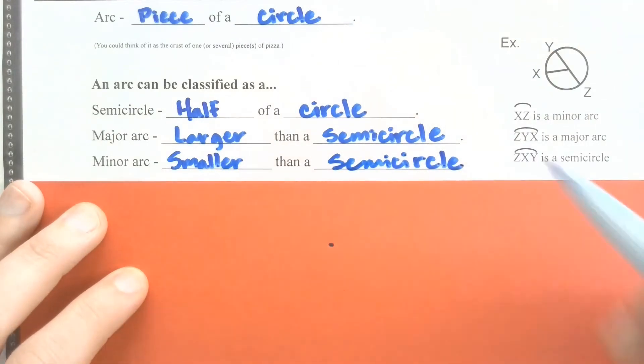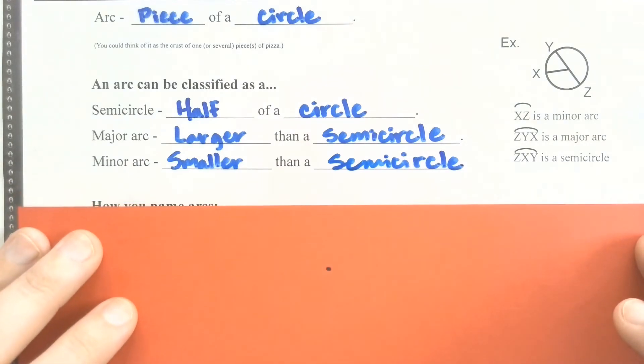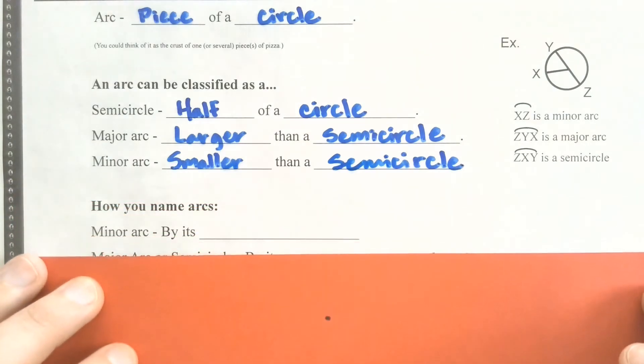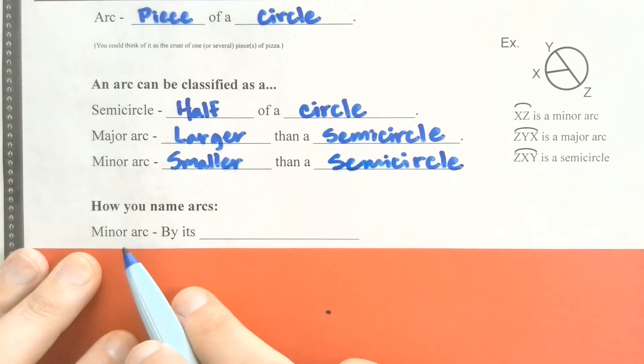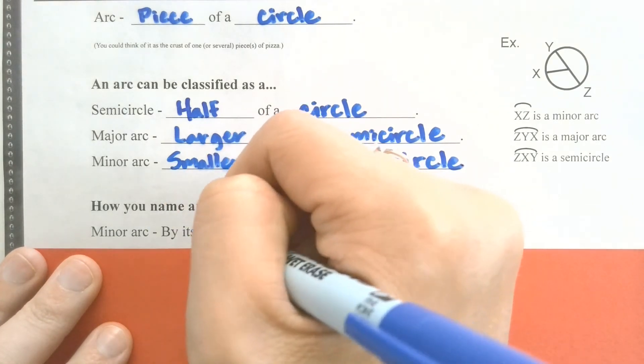And depending on whether we're talking about a semicircle, major, or minor arc, they're going to be named in a slightly different way. Our notation that we use is slightly different. If we're talking about a minor arc, we're going to name it just by its endpoints.